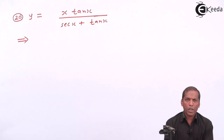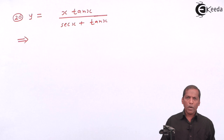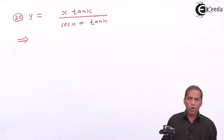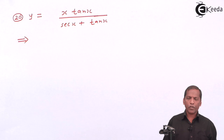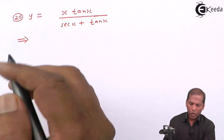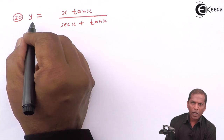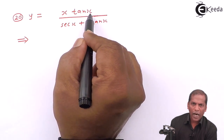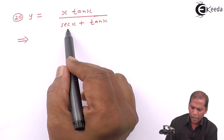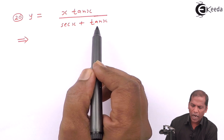Hello friends, now we see problem number 20, which is also based on the rules of differentiation from the chapter on differentiation. The problem is: y equals x times tan(x), divided by sec(x) plus tan(x).